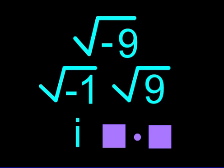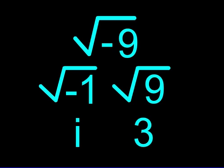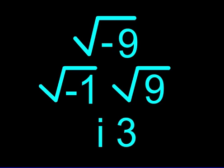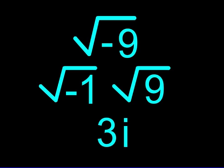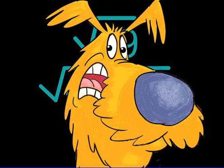What number times itself equals 9? That's right! 3 times 3 equals 9, so 3 is the square root. That leaves us with our answer: 3 times i, which is the same thing as saying 3i. Yes!